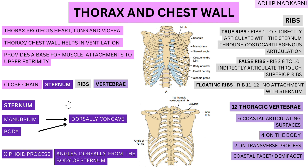The thorax has three main components: the sternum, the ribs that go around, and posteriorly the thoracic vertebrae. Together they form a closed chain — nothing is open — so all three components are dependent on each other.